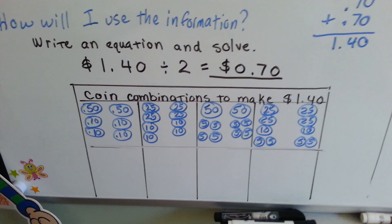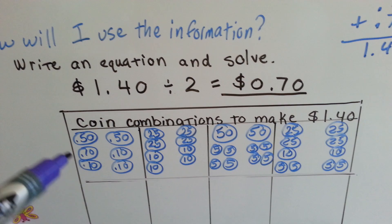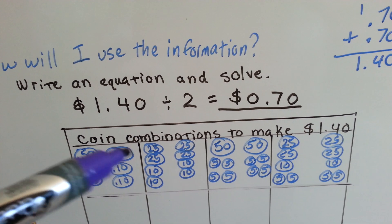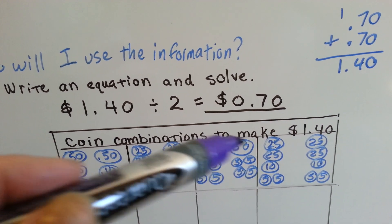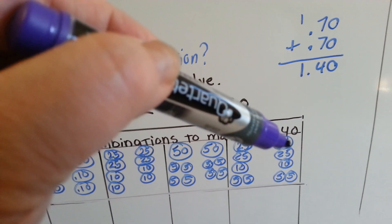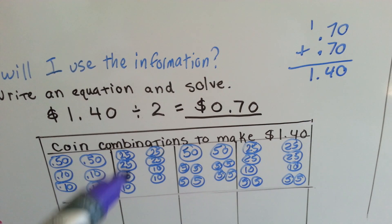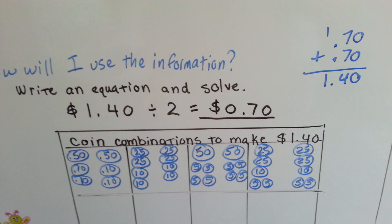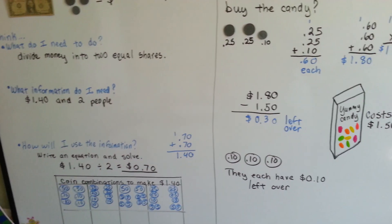Now, there's all different kinds of money combinations that we could have given them. Each of these boxes is a dollar forty. They each could have gotten a fifty-cent piece and two dimes, two quarters and two dimes, a fifty-cent piece and four nickels, or two twenty-five-cent pieces, a dime and two nickels. And each one of them would have had seventy cents. All different combinations to make money. We could have even given them seventy pennies each.